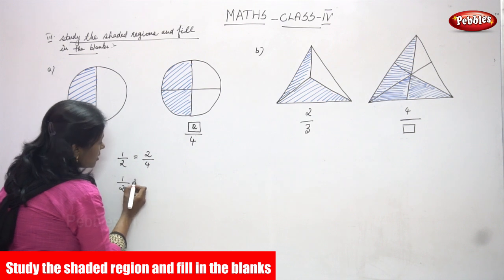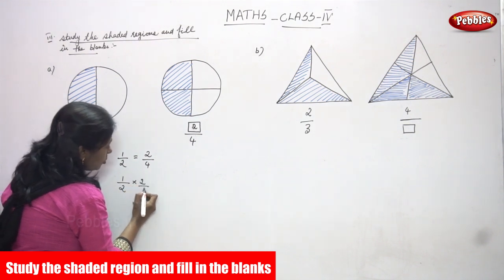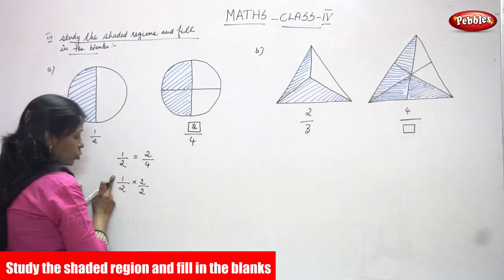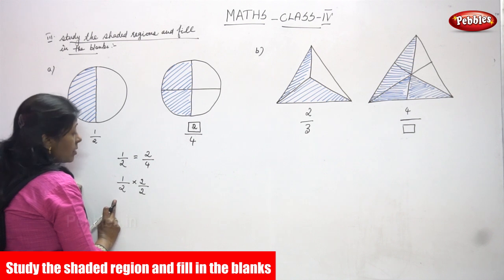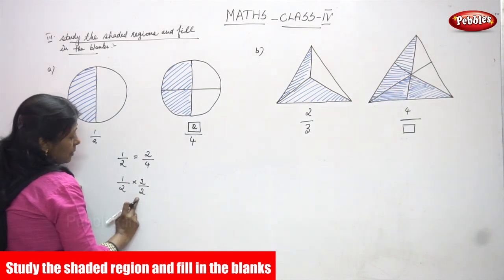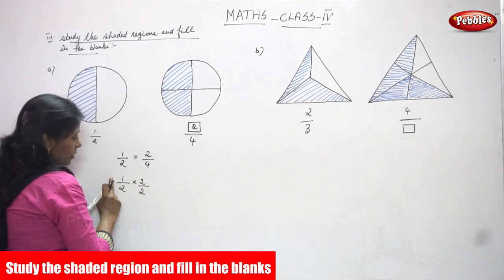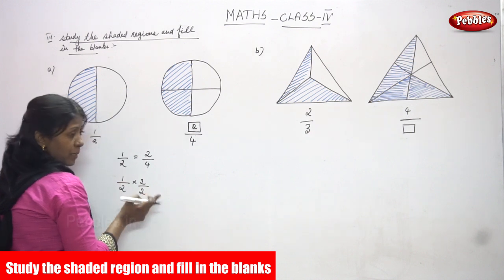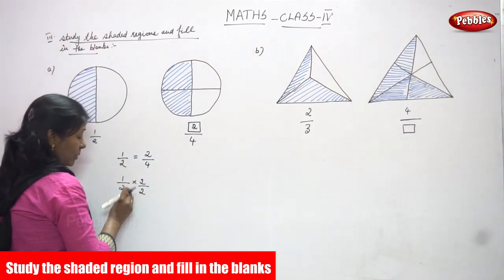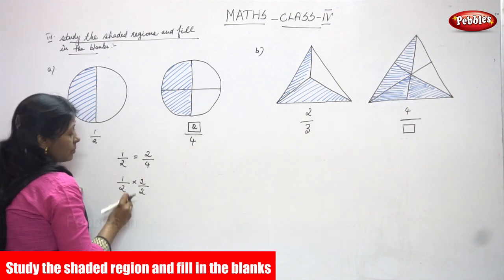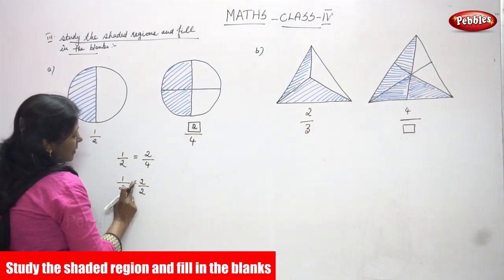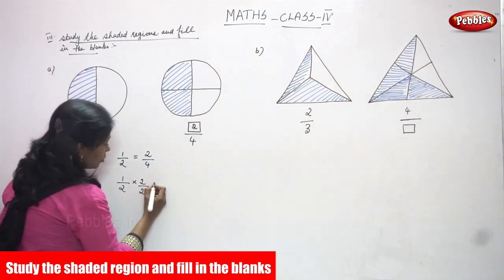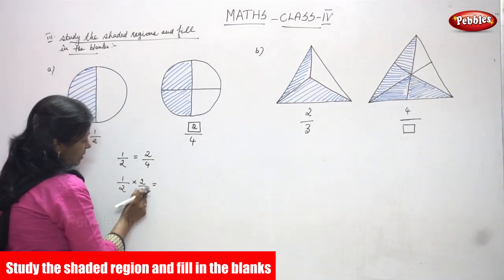One by two is equal to two by four — it is an equivalent fraction. How? I multiply by two. One is the numerator and two is the denominator. If the numerator is multiplied by two, the denominator is also multiplied by two — that is the rule. So one by two multiplied by two.